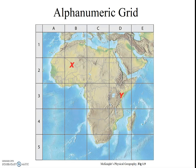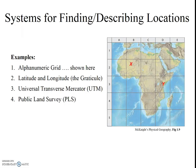So you can see that the alphanumeric grid is fairly simple to use, and in reality most of the other grid systems are too. For now though, we'll focus our attention on the latitude-longitude system, also called the Graticule. This is the system we will be using in our course. It is very important that you understand this system, so work through the lesson carefully, don't rush, and be sure to contact me if you have any questions. I'll also give you some links where you can practice using this system.